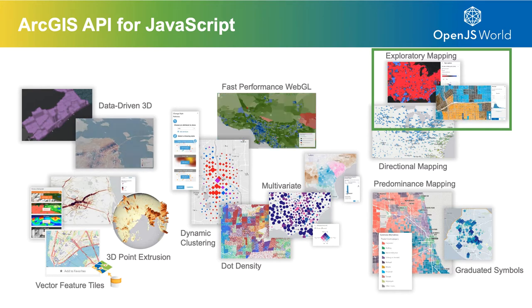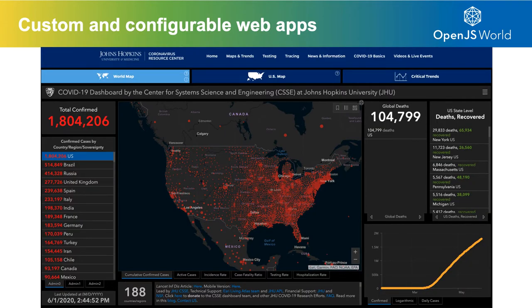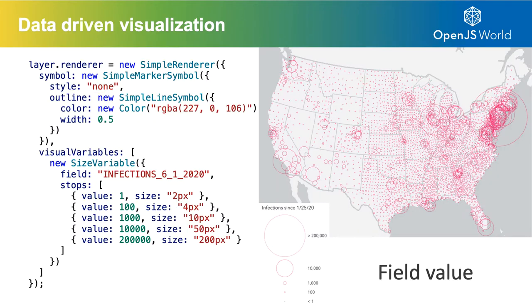This is all about exploring data. Some apps built with the JavaScript API include configurable applications that Esri openly provides to customers, including dashboards such as this one — Johns Hopkins University's Coronavirus Resource Center, the most up-to-date tracking app of the virus today, built using a configurable template on top of the JavaScript API. The ArcGIS API for JavaScript isn't just about showing where things are located; it's more about what is there, how much of it exists, and doing that in a meaningful way.